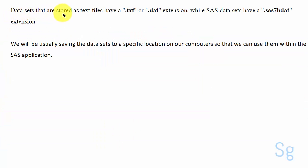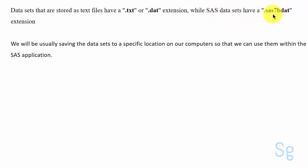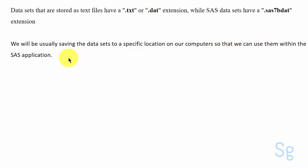Datasets that are stored as text files have a .txt or .dat extension, while SaaS datasets have a .sas7bdat extension. We will usually be saving the datasets to a specific location on our computers so that we can use them within the SaaS application.